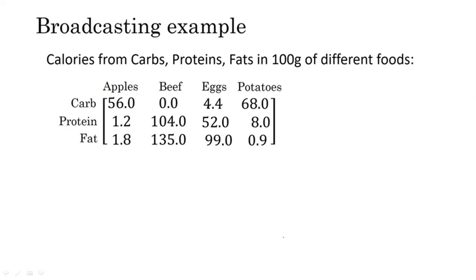Another example: suppose we take 100 grams of potatoes. Considering carbs, you can get 68 calories from carbs, 8 calories from protein, and 0.9 calories from fat. I hope the significance of this matrix has been clearly understood. This matrix has a dimension of (3, 4) and I represent it as capital A.